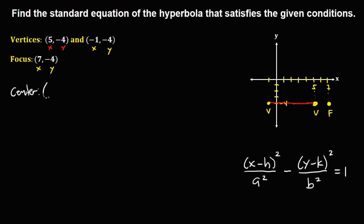To solve for the center, we find the midpoint of the two vertices. From the first vertex to the second vertex, we find the distance between them: 1, 2, 3, 4, 5, 6. The distance is 6, so we divide by 2 to get 3. Counting 3 units from one vertex, this is now the center of the hyperbola.